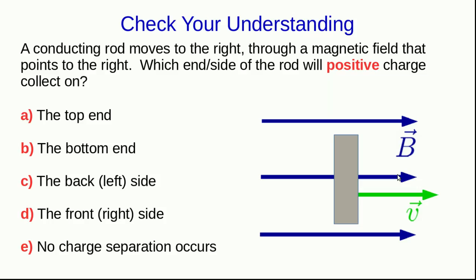Well, let's check that you're understanding this so far. So now suppose we have a magnetic field to the right, and we have a metal rod that is moving to the right through this magnetic field. Which end or which side of the rod is going to end up positively charged as a result of this?